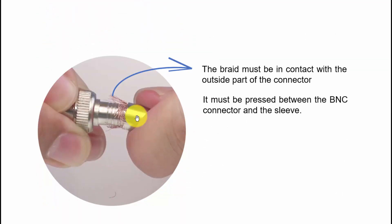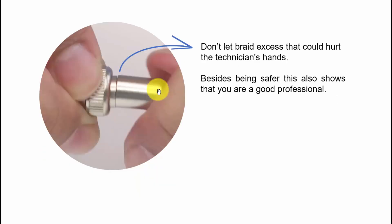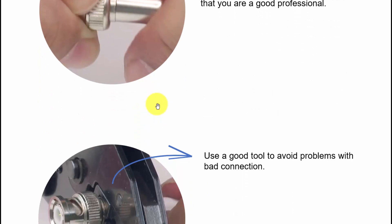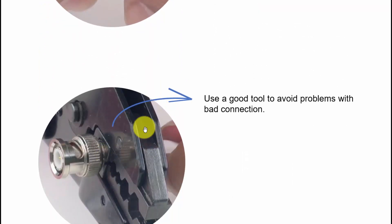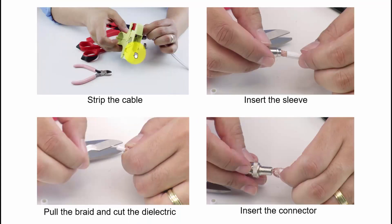You just push the sleeve towards the front part of the connector, and the sleeve is going to have contact with the braid. So you're going to have your connector like this one, and you use the crimp tool to crimp the connector like this, and it's done. It's pretty simple.